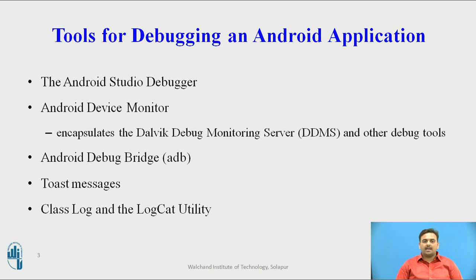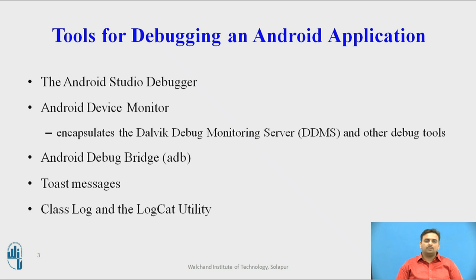The first one is the Android Studio Debugger. The second one is ADM, that is called the Android Device Monitor. The third one is the Android Debug Bridge. The fourth one is the Toast Message, and the last one is the Log Class and LogCat Utility. Mainly in this video, I am going to focus on these five tools which are generally used for debugging purposes.